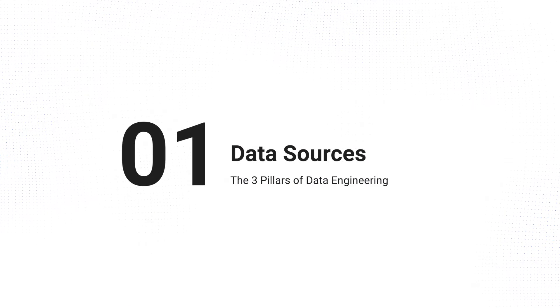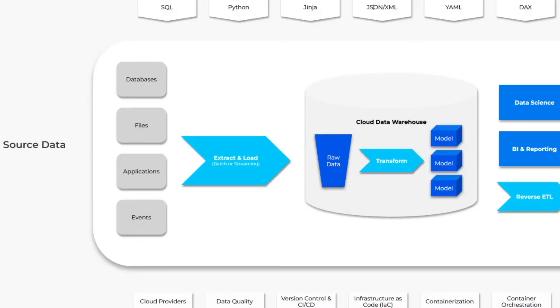Number one: any team and any company that you're going to work for, if they're working with data, they're definitely going to have multiple source systems. Maybe that's an internal application, maybe they have different third-party advertising platforms — every company is really, at the core, just a combination of all of these different systems at play. As a data engineer, it's our job to take all of the information from those sources, make sense of them, and make use of it. So the first pillar is identifying those source systems and the source integrations, if they exist already.